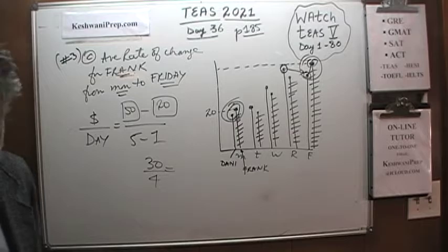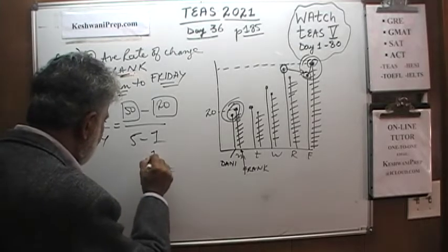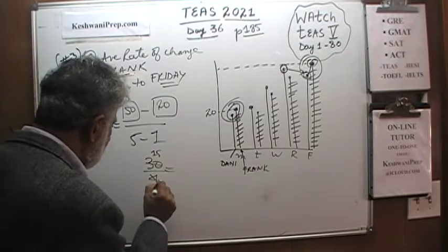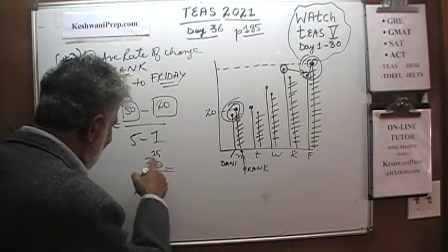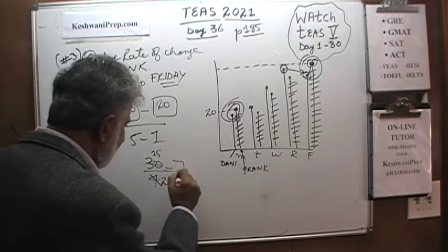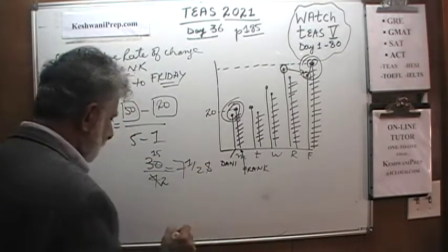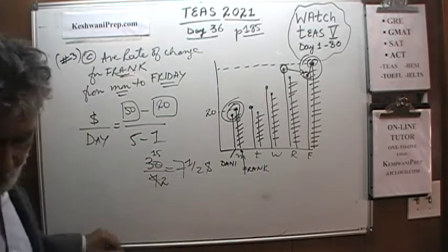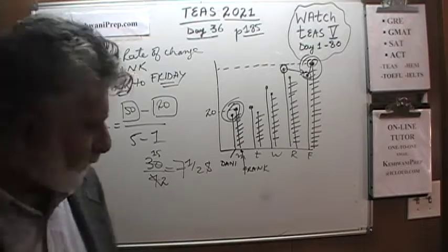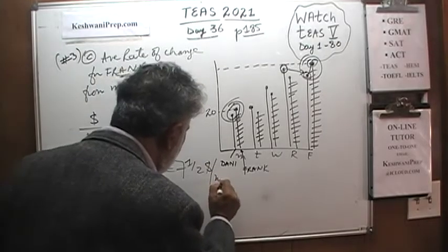Of course, we cannot leave it as 30 over 4. We reduce top and bottom so it becomes 15 over 2, and half of 15 is 7 and a half. The rate of change was 7 and a half dollars per night.